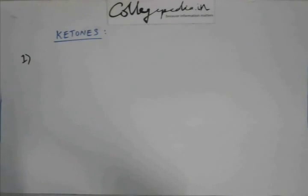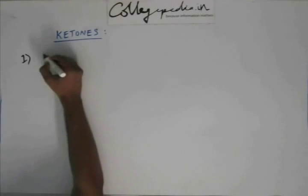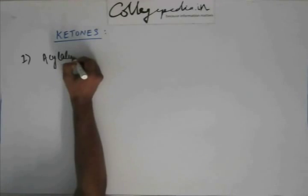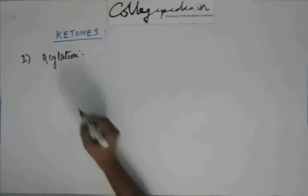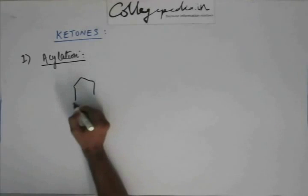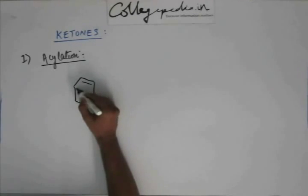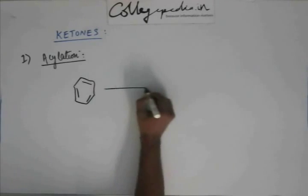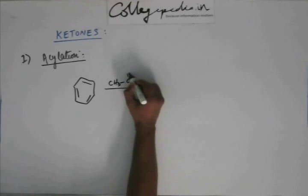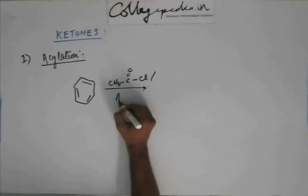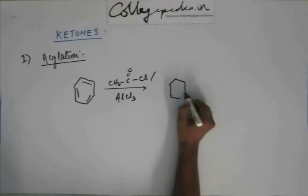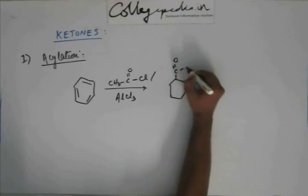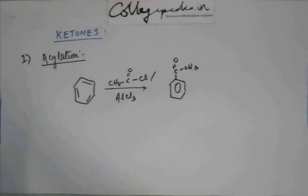One of the reactions we studied in the chapter of hydrocarbons was acylation — we called it Friedel-Crafts acylation. What happens in Friedel-Crafts acylation is: if we have benzene (it can be substituted benzene as well) and we take a carbonyl chloride and a Lewis acid like AlCl3, then the product would be acetophenone. This is a method of preparation of ketones.